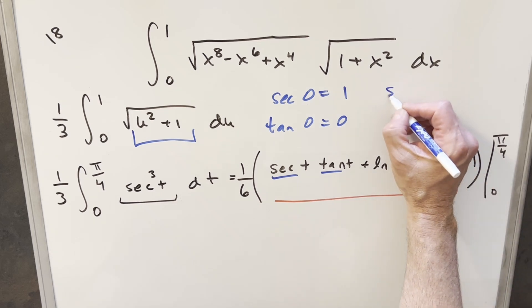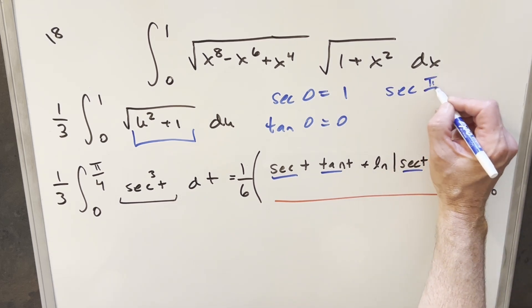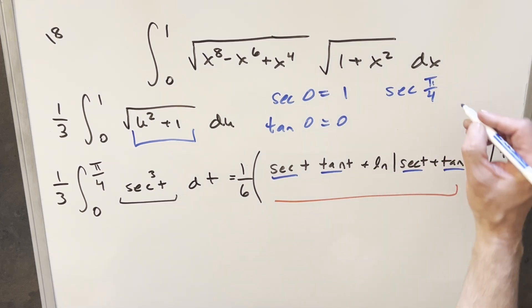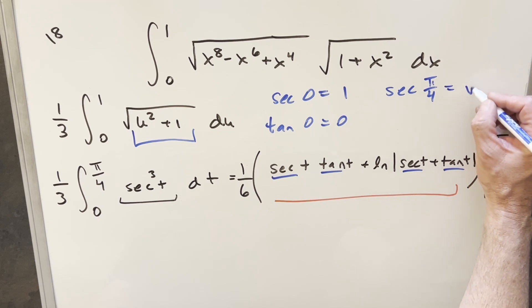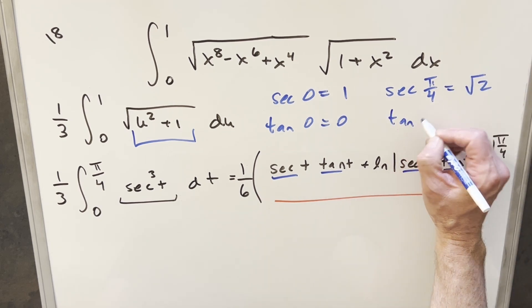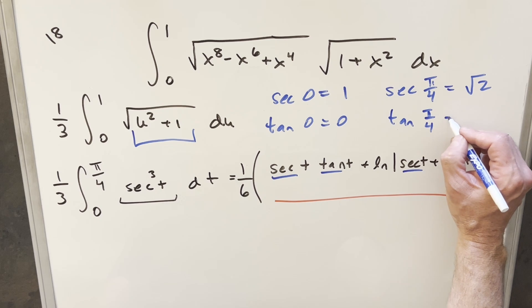And then let's see what happens at pi over 4. Secant of pi over 4, what we know from cosine of pi over 4 is 1 over square 2. So secant pi over 4 is going to be square root of 2. And then for tangent at pi over 4, that's just going to be 1.